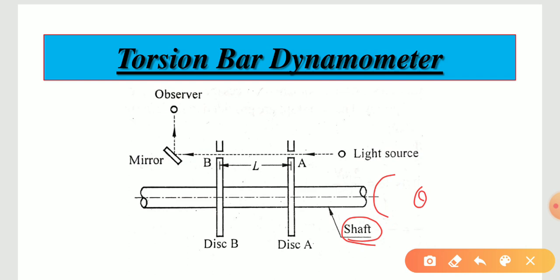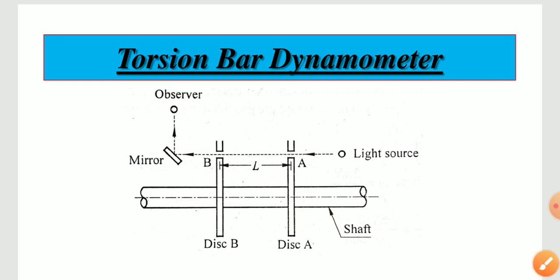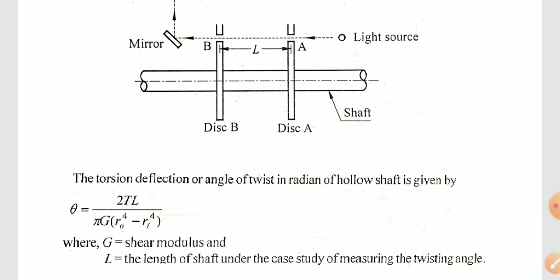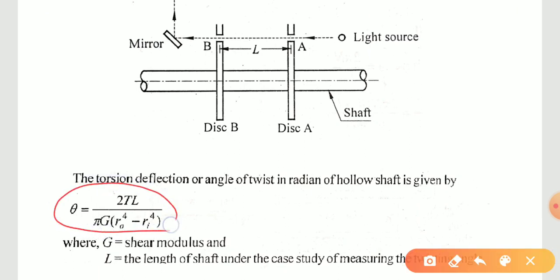Consider a hollow shaft with inner and outer diameters. The torsion deflection or angle of twist in radians of a hollow shaft is given by an equation where T is the torque, L is the length between disk A and disk B, ro and ri are the outer and inner diameters of the hollow shaft, and G is the shear modulus.